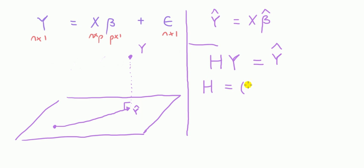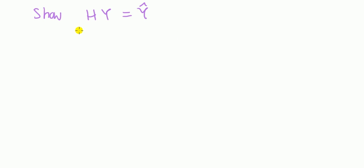H is X times X transpose X inverse X transpose, like that. And then Y. So to finish off with, let's demonstrate this. The hat matrix, H times Y is going to give you Y hat, hence the name hat matrix. We've just said what Y is, so prove.